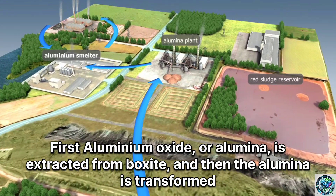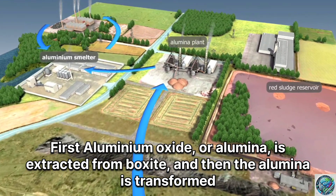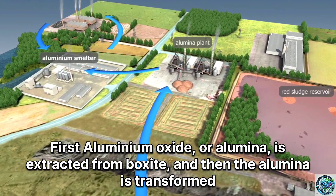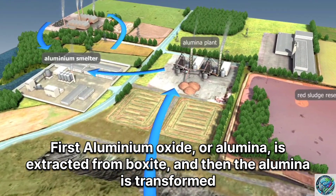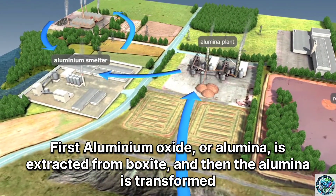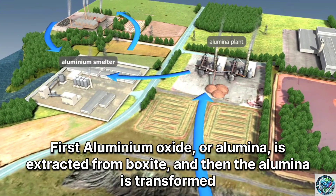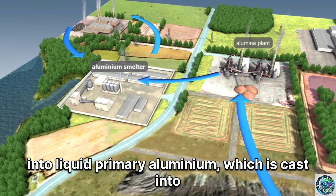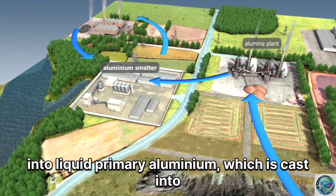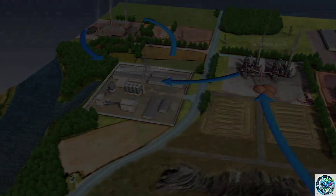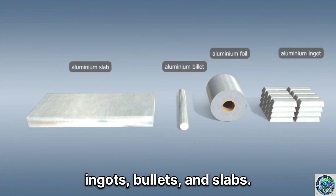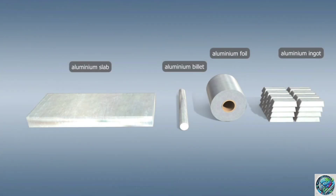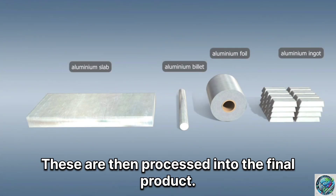First, aluminium oxide, or alumina, is extracted from bauxite, and then the alumina is transformed into liquid primary aluminium, which is cast into ingots, billets, and slabs. These are then processed into the final product.